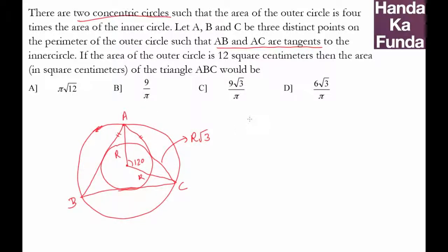And what is the area of an equilateral triangle? Root 3 by 4 into side square. How much is the side? The side is r root 3 and then square.